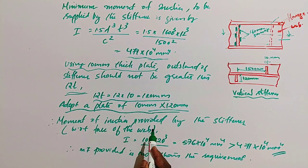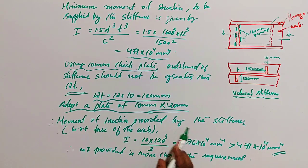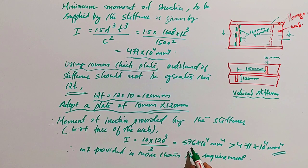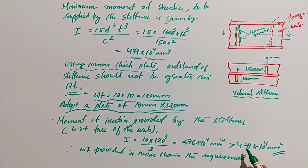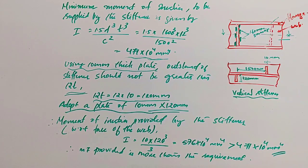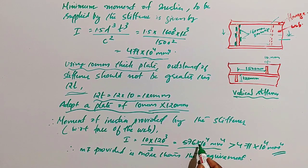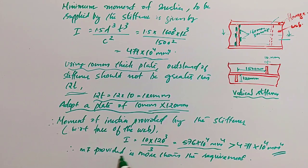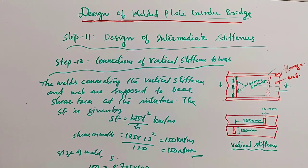The moment of inertia provided by the stiffener, with respect to the face of the web, is I = bd³/3, where b = 10 and d = 120, giving 576×10⁴ mm⁴. This is greater than the minimum required moment of inertia of 471×10⁴ mm⁴. Therefore, adopting a 10 mm × 120 mm plate with outstand 120 mm provides sufficient moment of inertia. Hence safe. Next: connection of vertical stiffener to the web.